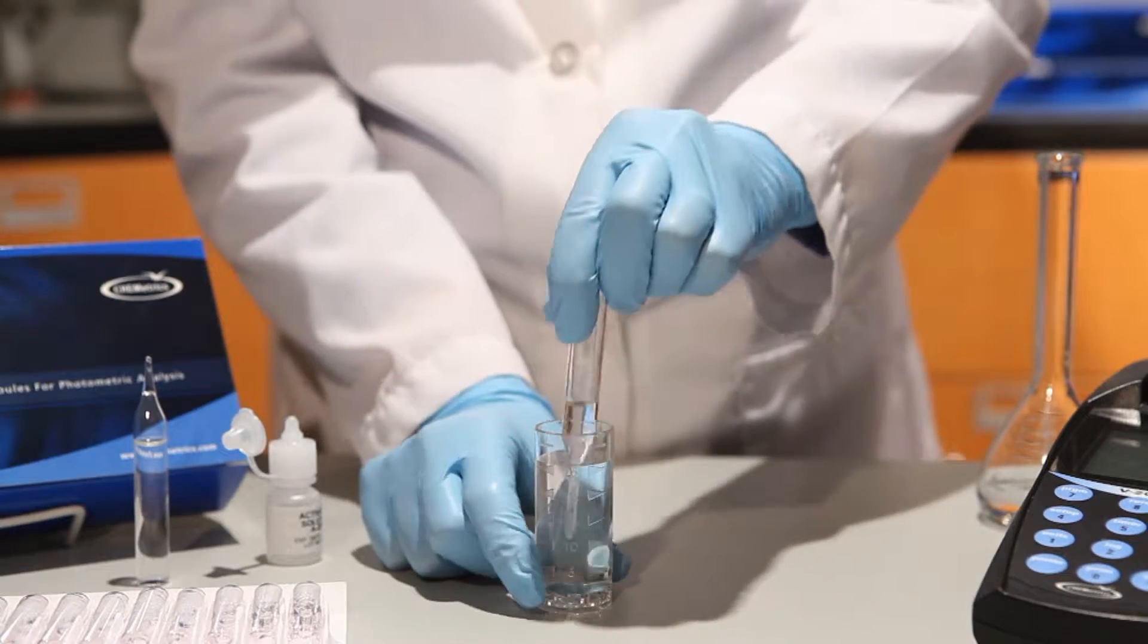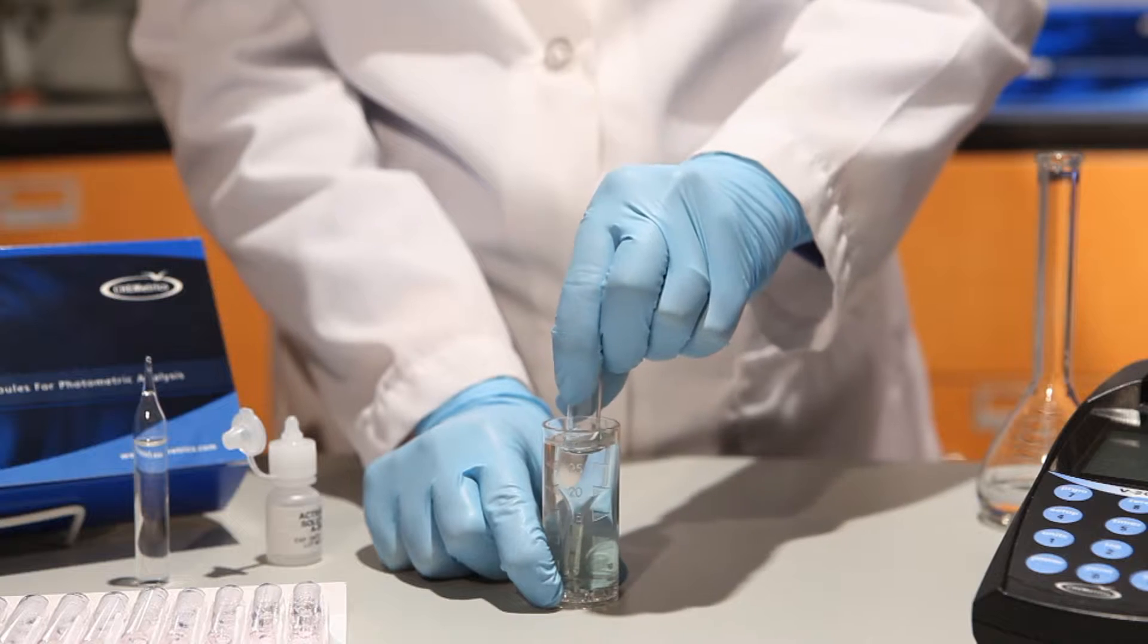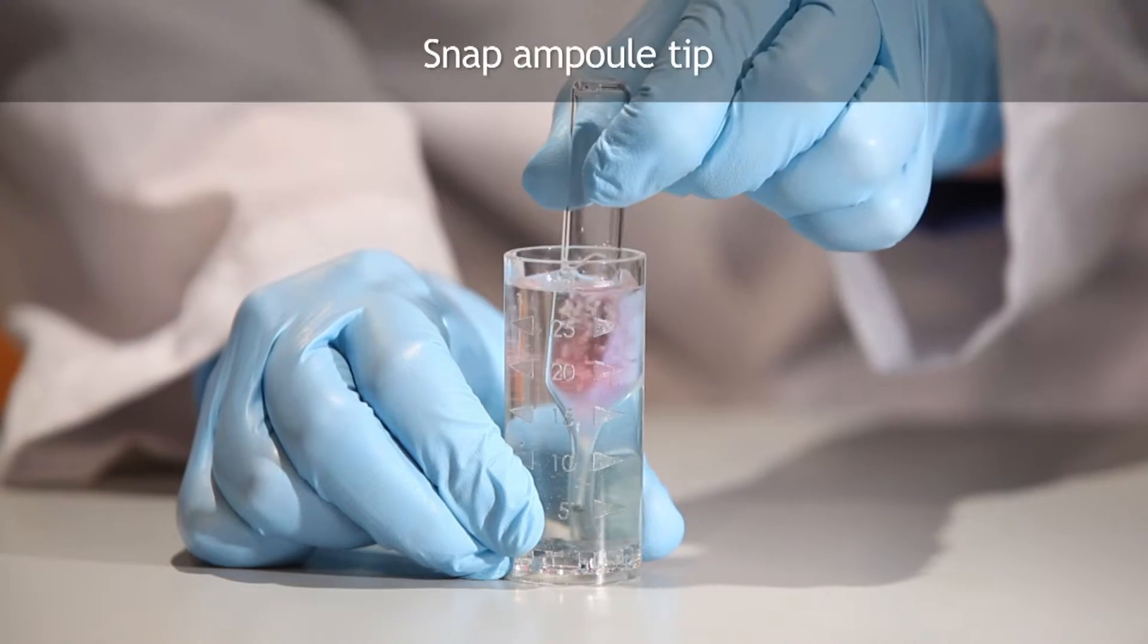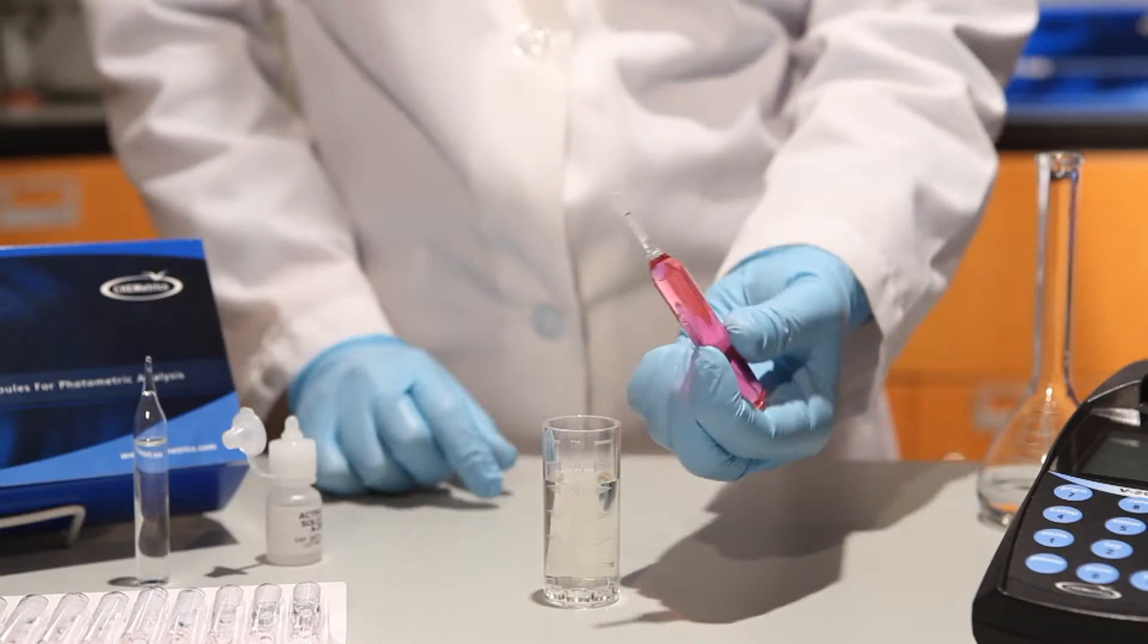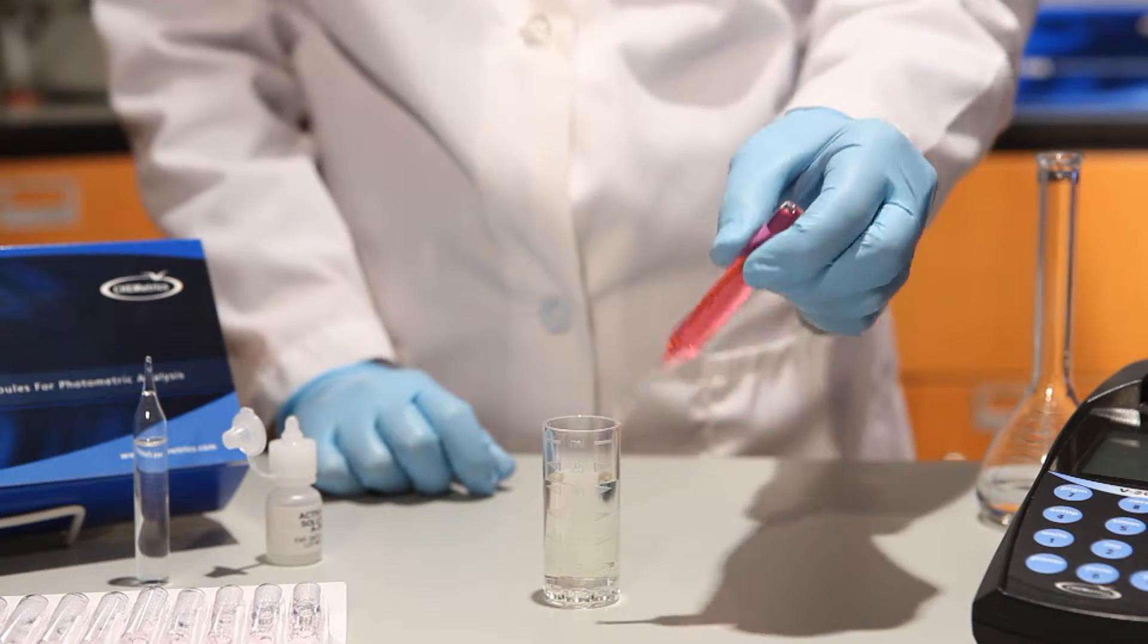Place the Vacuvial Ampule, tip first, into the sample cup. Snap the tip of the ampule by pressing the body of the ampule against the side of the cup. The ampule will fill, leaving a bubble for mixing.